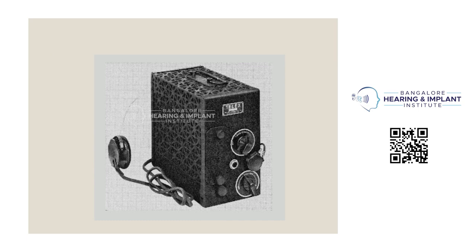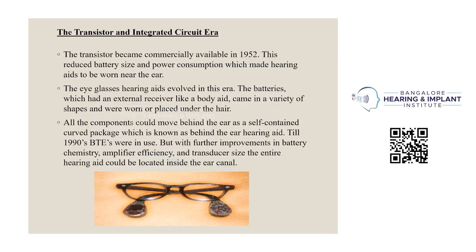After the vacuum tube era, we move to the transistor and integrated circuit era. The transistor became commercially available in 1952, which reduced battery size and power consumption, making hearing aids wearable near the ear. The eyeglass hearing aid evolved in this era. Batteries with an external receiver like a body aid came in a variety of shapes and were worn or placed under the hair. All components could move behind the ears in a self-contained curved package known as the behind-the-ear aid. Until the 1990s, BTEs were in use, but with further improvements in battery chemistry, amplifier efficiency, and transducer size, the entire hearing aid could be located inside the ear canal.